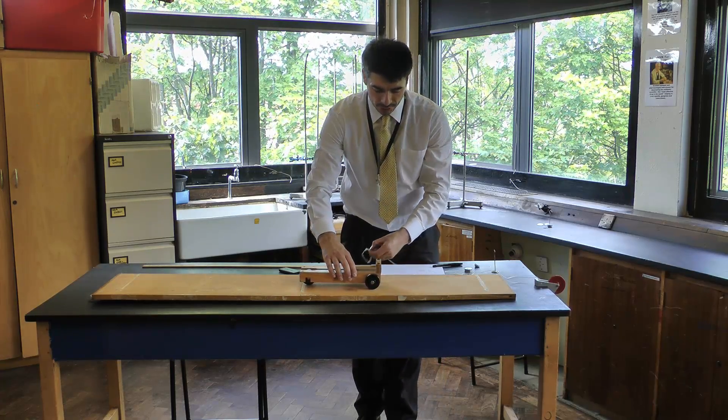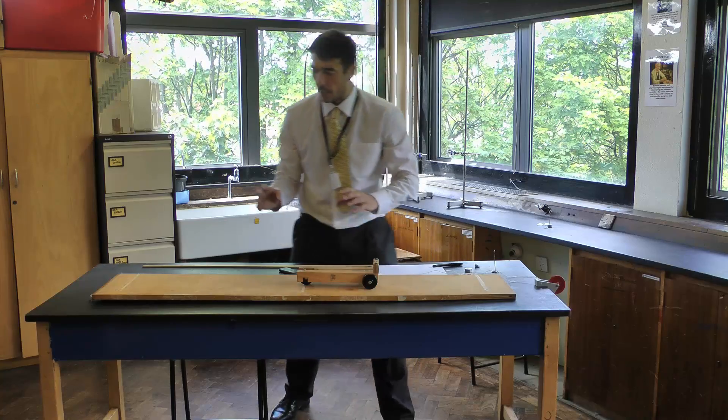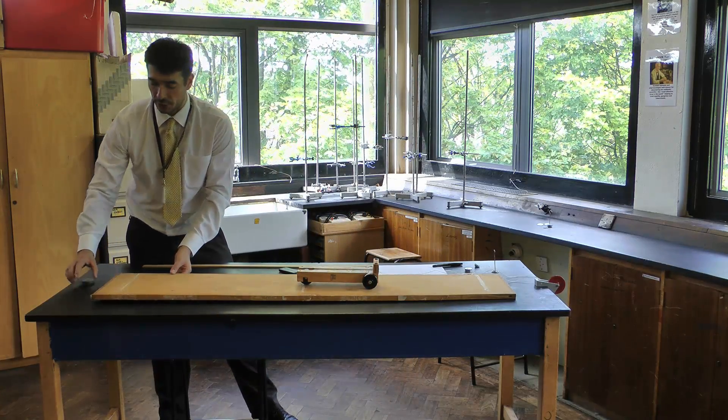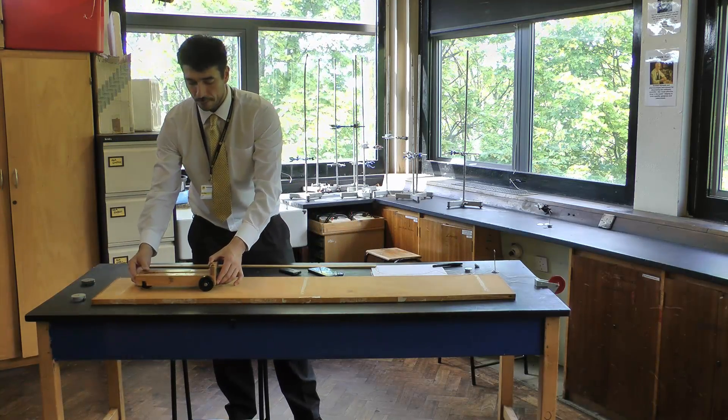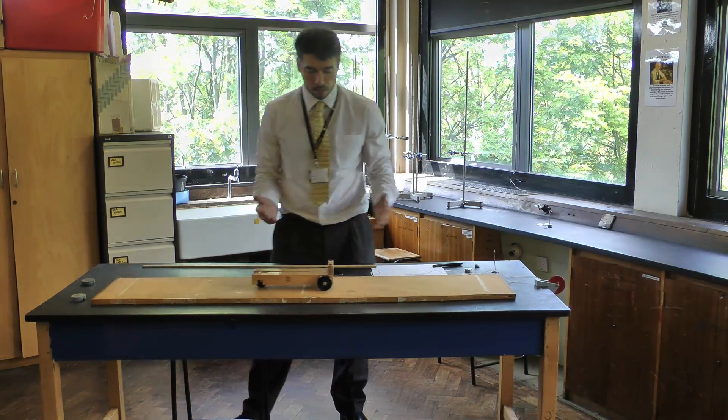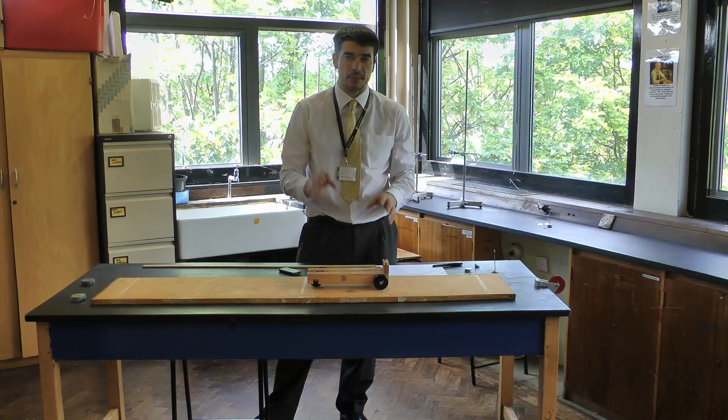Number one, you want to try and set up where the trolley moves as though it's moving without friction. Now, if I try and roll the trolley, you can see it comes to rest because of friction.